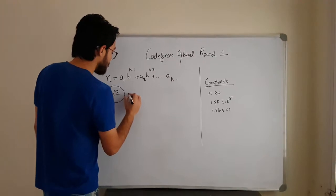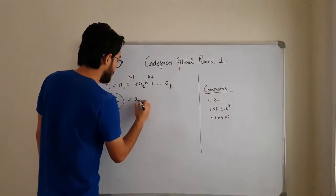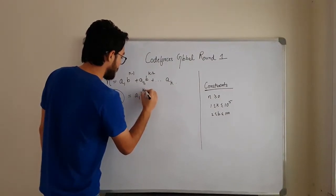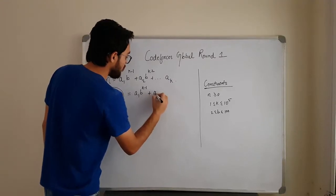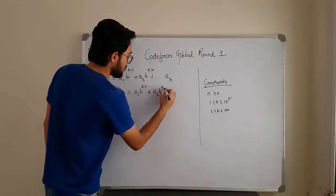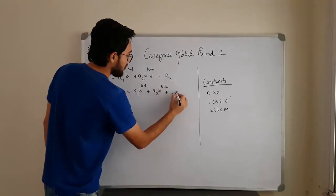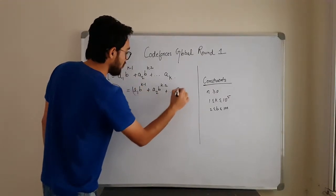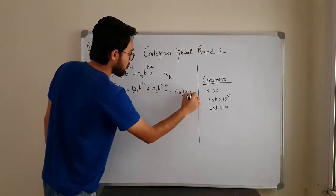So what it basically turns out to be that you need to find a1 b to the power k minus 1 plus a2 b to the power k minus 2 plus dot dot dot ak. This whole modulo 2.